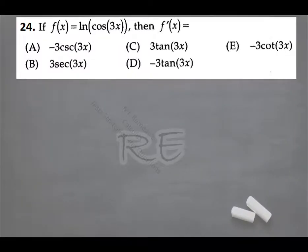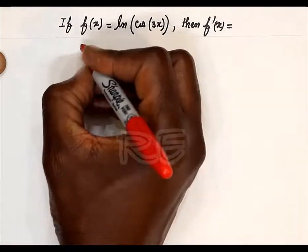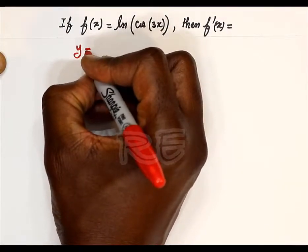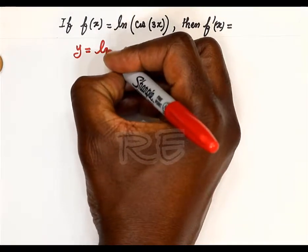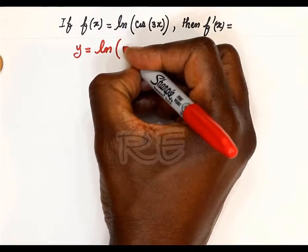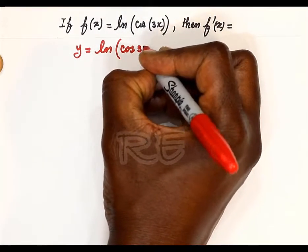Question 24: You're looking for the derivative of ln(cos(3x)). y is equal to ln(cos(3x)).